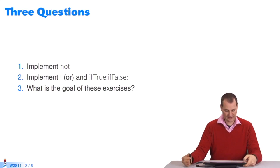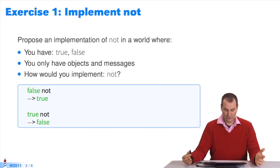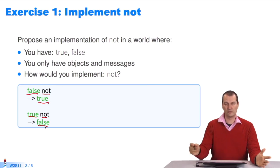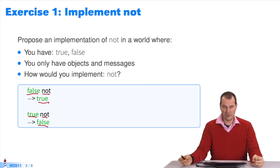Let's take a look at them. First, you have the booleans TRUE and FALSE. You have messages and objects. How to implement NOT? It's quite easy. If you have FALSE and send the message NOT, it returns TRUE. If you have TRUE and send the message NOT, it returns FALSE. It's not so hard. But how do you implement this?